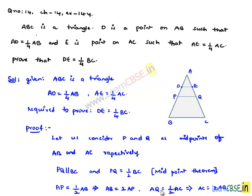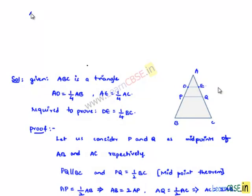Let us substitute these both equations in AD is equal to one-fourth AB and AE is equal to one-fourth AC. Now, as AD is equal to half times AP and AE is equal to half times AQ.